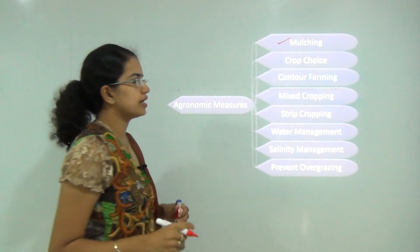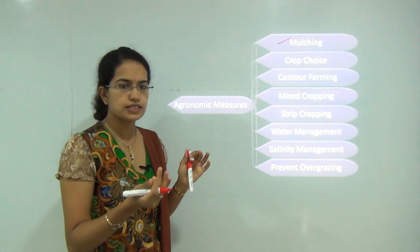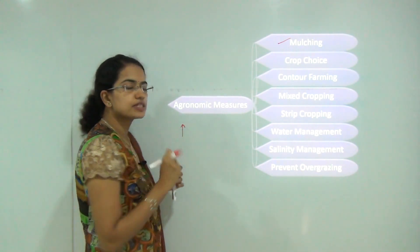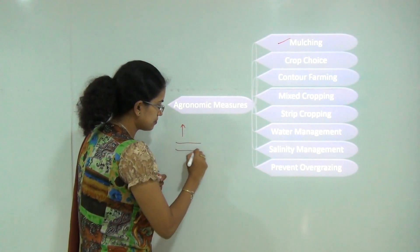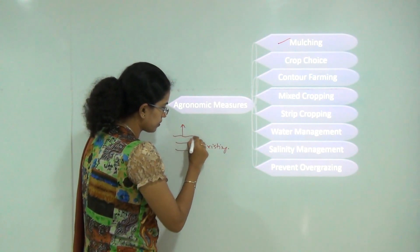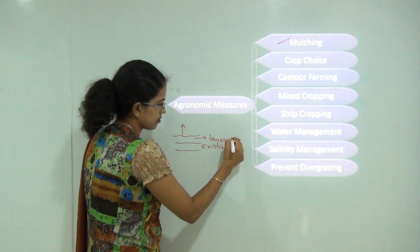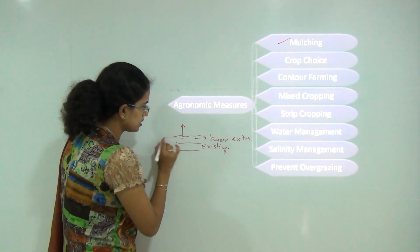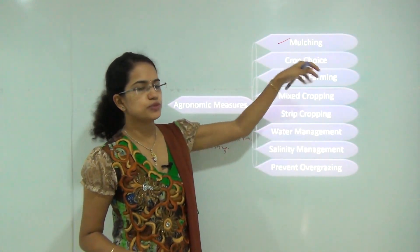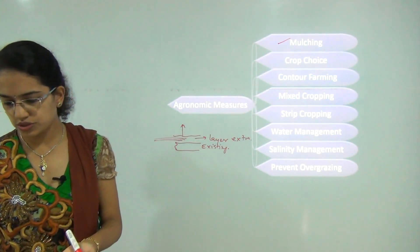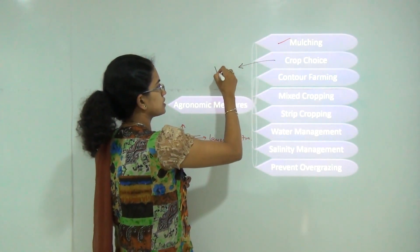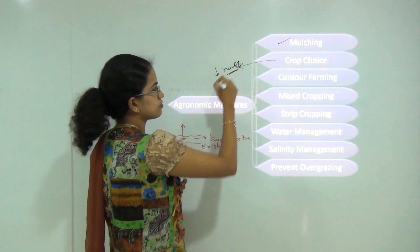With mulching, there would be an increase in infiltration, evaporation would decrease, and surface runoff would decrease. Under mulching, you add an extra layer of soil on top of the existing layer; if erosion takes place, this extra layer goes off and the original layer is retained. In crop choice, you try to choose crops which have good coverage — when there is good coverage, surface runoff decreases, preventing soil erosion.